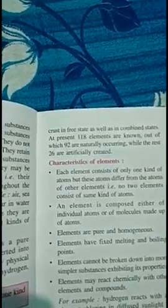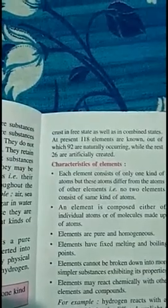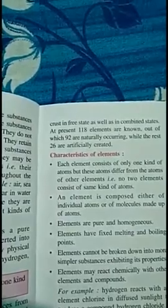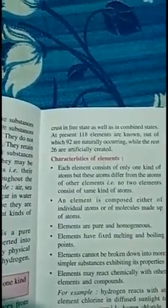What are the properties of an element? Each element has its own characteristics. Each element is made up of only one kind of atom, and these atoms vary from the atoms of another element. For example, the atom of iron will vary from the atom of gold. All atoms of iron are similar, and all atoms of gold are similar, but the atoms of both elements differ from each other.